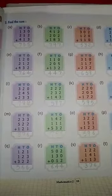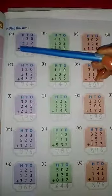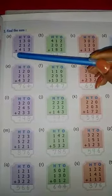And this is find the sum. Here you have to add 130, 212 and 413.